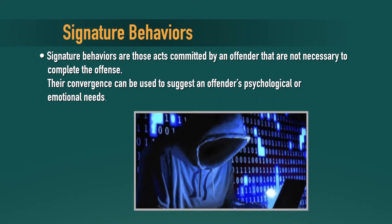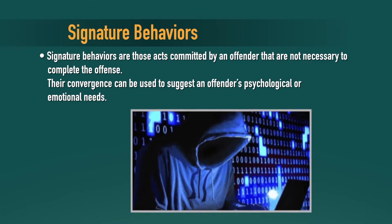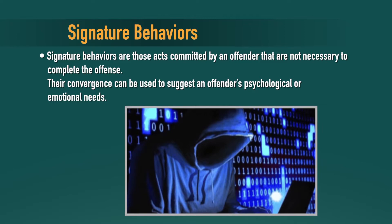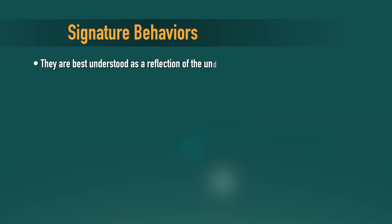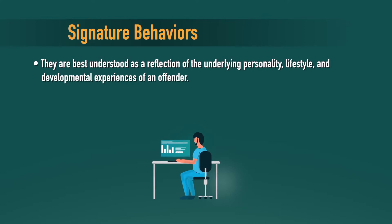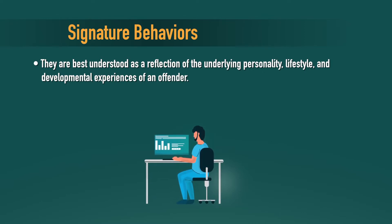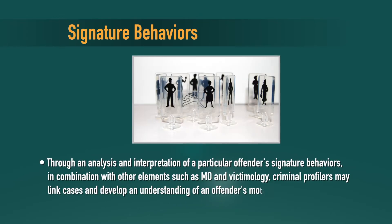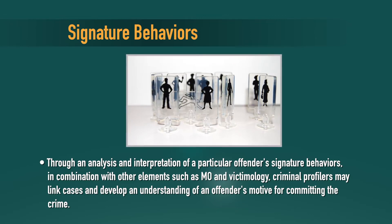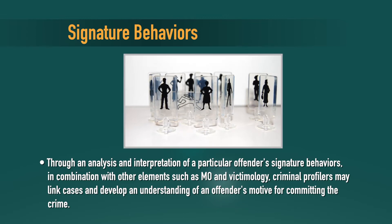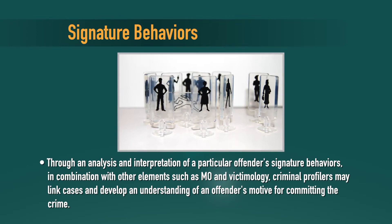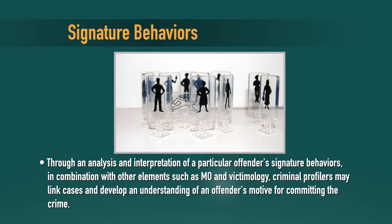Signature behaviors are those acts committed by an offender that are not necessary to complete the offense. Their convergence can be used to suggest an offender's psychological or emotional needs. They are best understood as a reflection of the underlying personality, lifestyle, and developmental experience of an offender. A thorough analysis of a particular offender's signature behaviors, in combination with other elements such as modus operandi and victimology, allows criminal profilers to link cases and develop an understanding of an offender's motive for committing the crime.